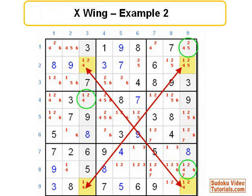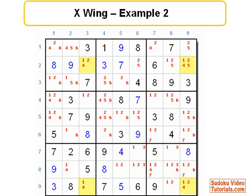So, let's remove the 4s from the 3 cells. As soon as we do that, we're left with a naked pair over here in row 4, which will hopefully help us make further progress.